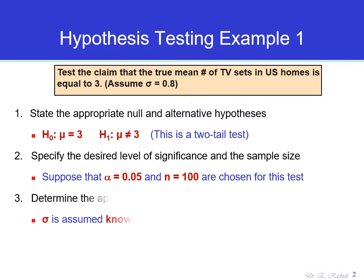The next step is to determine the appropriate technique — what test statistic should we use as evidence. Since we are talking about the average of the population, mu, and since the standard deviation of the population sigma is known, we can use a Z statistic to test the hypothesis. So the test statistic is going to be a Z test.